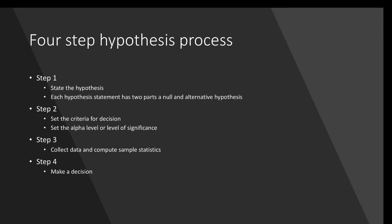Step one is state the hypothesis. Each hypothesis has two portions and we'll talk about those. Step two, we're going to set a criteria for decision and a level of significance, collect some data and compute the sample statistics in step three and we're going to make a final decision in step four.